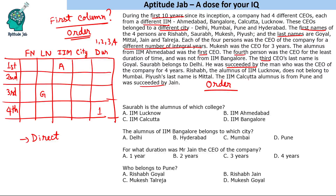The IIM Calcutta alumnus is from Pune and was succeeded by Jain. If this person is succeeded by someone, they cannot be the last person. The first CEO is from IIM Ahmedabad, so that's not IIM Calcutta. The third CEO's last name is Goyal, so IIM Calcutta is the second CEO, who is from Pune, succeeded by Jain. Since the fourth person was not from IIM Bangalore, the fourth is from IIM Lucknow and the remaining is IIM Bangalore.